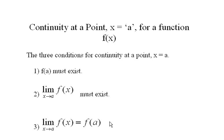I've got three conditions for continuity. Two of them are necessary and the third is both necessary and sufficient. So the first one is that if a function is going to be continuous at a point a, then f of a has to be there, it has to exist.